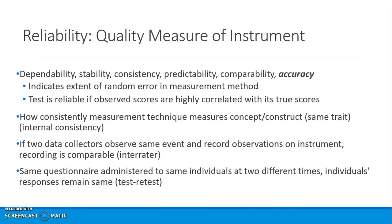You want to know that the observed scores — the scores you get from your participants — are highly correlated with their true scores. You might look at measuring the construct and looking at how the items are internally consistent, kind of like inter-item correlation.